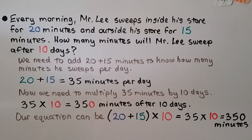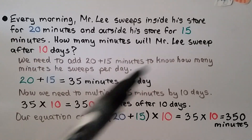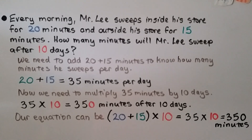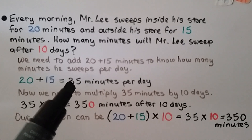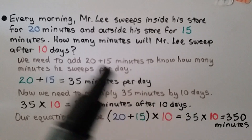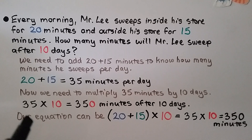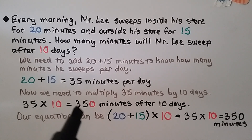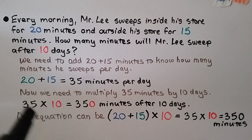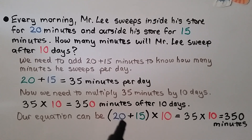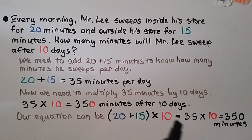Every morning Mr. Lee sweeps inside his store for 20 minutes and outside his store for 15 minutes. How many minutes will Mr. Lee sweep after 10 days? We add 20 plus 15 to find how many minutes he sweeps per day: that's 35 minutes per day. Now we multiply 35 minutes by 10 days. 35 times 10 equals 350 minutes. There's a zero in the factors, so we have 35 with a zero — 350 minutes after 10 days.